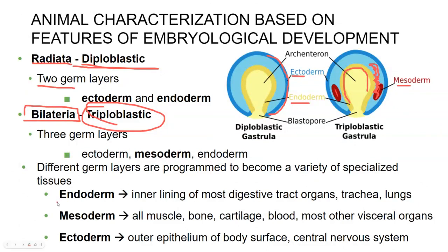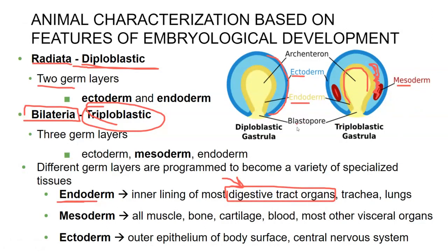What does that mean? Endo meaning the inside — this is going to be your inner digestive tract organs: your stomach, your trachea and lungs, your esophagus, your intestines. This is all going to develop from your endoderm. And this blastopore is either going to be the mouth or the anus, depending on which type of animal we're talking about — whether the mouth forms first or the anus forms first. Endoderm should be easy to remember: endo meaning inside your body.